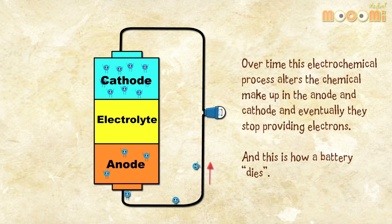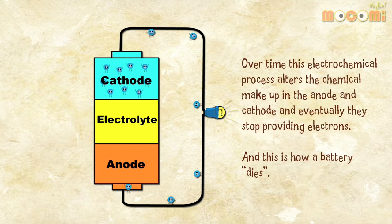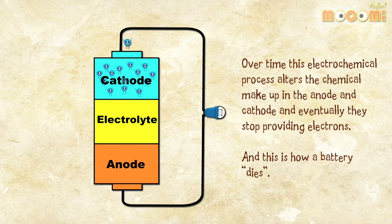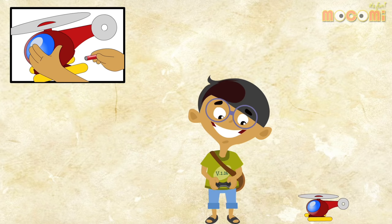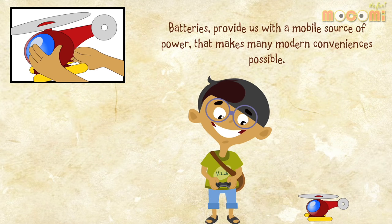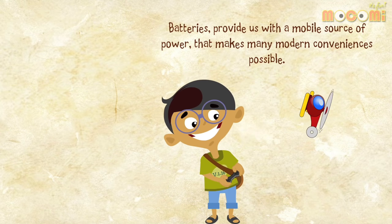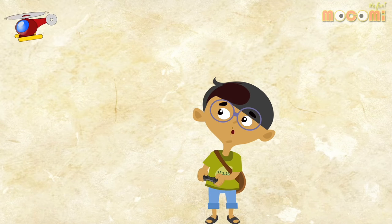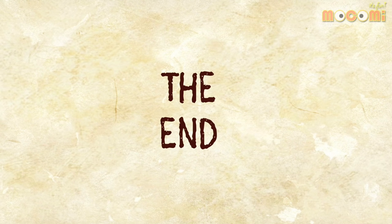Over time, this electrochemical process alters the chemical makeup in the anode and cathode, and eventually they stop providing electrons. And this is how a battery dies. Batteries provide us with a mobile source of power that makes many modern conveniences possible.